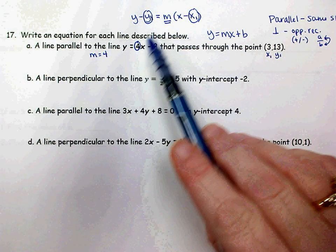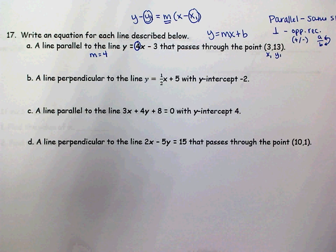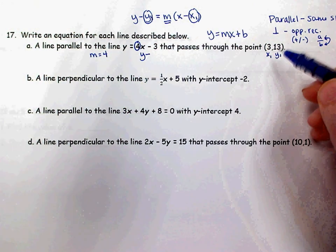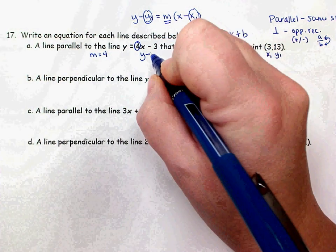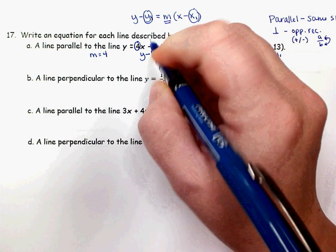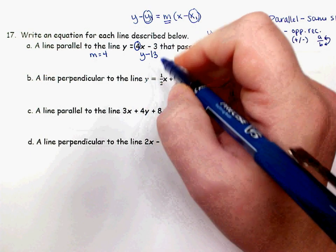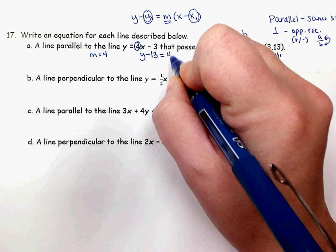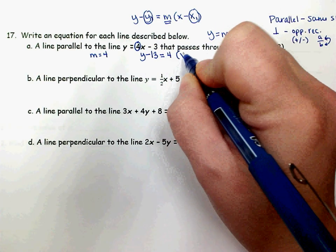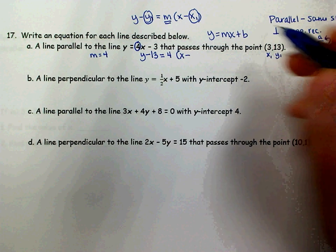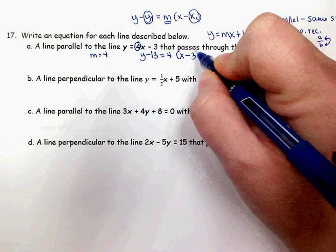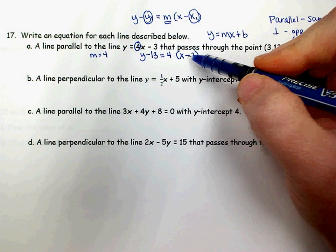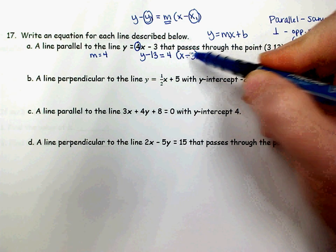We're putting 4 in for m. So I have y minus my y-coordinate of my point, which is 13 — remember that subtraction is part of the formula — equals my slope of 4, times x minus my x-coordinate, which is 3. If that had been a negative 3, remember when you subtract a negative, this would have turned into addition.